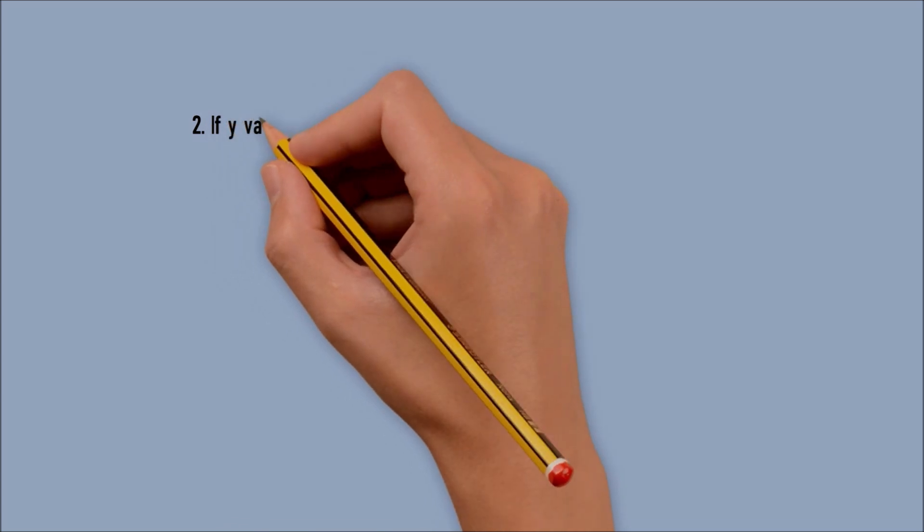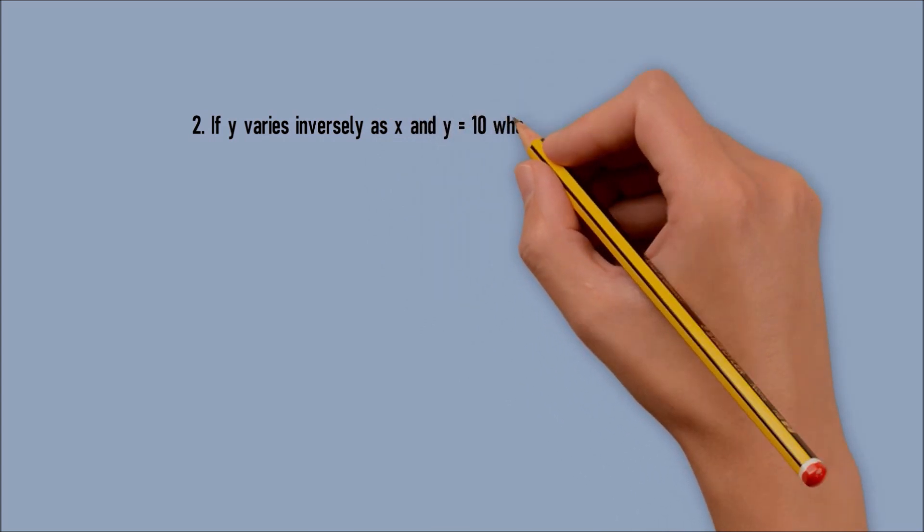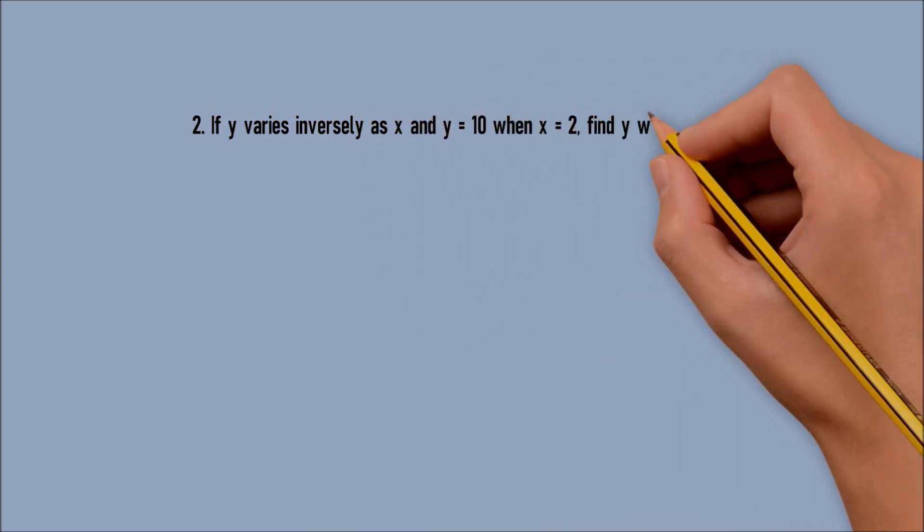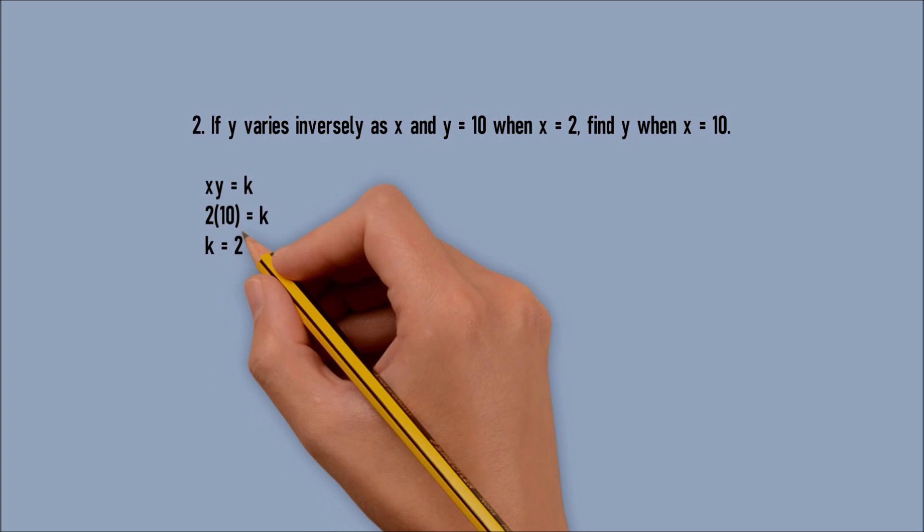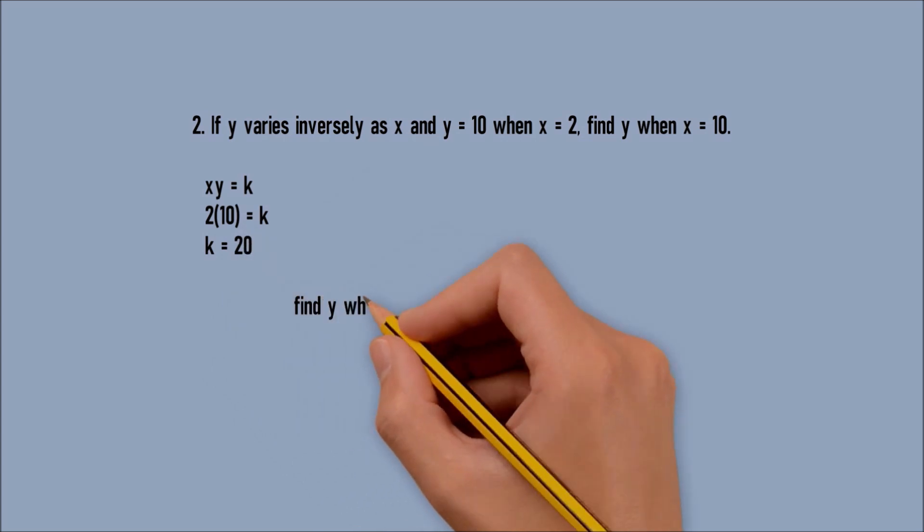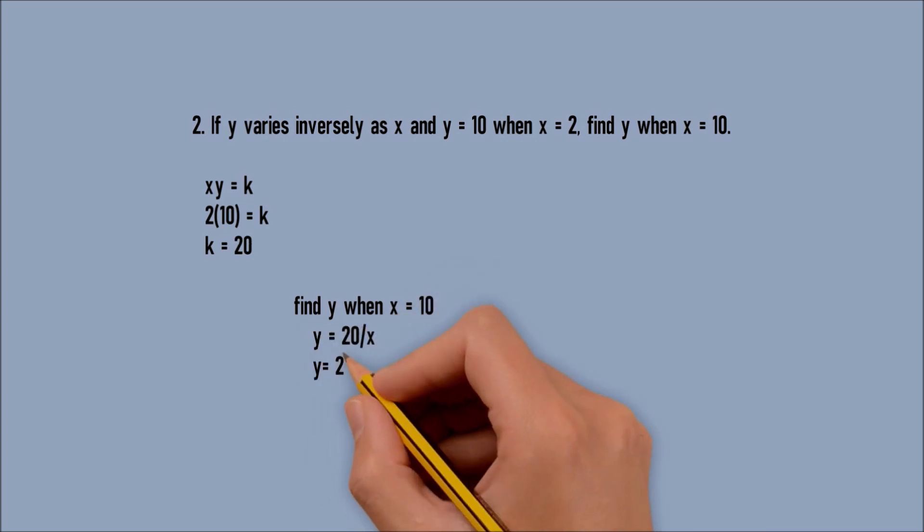Number 2. If y varies inversely as x and y is equal to 10 when x is equal to 2, find y when x is equal to 10. From the equation y is equal to k over x, transform it into k equals xy. For we have to solve first the value of k, then substitute the value of x and y. So k is equal to 2 times 10, k is equal to 20. So that is the constant. Then find y when x is equal to 10. So y is equal to 20 over x, y is equal to 20 over 10. Therefore, y is equal to 2.